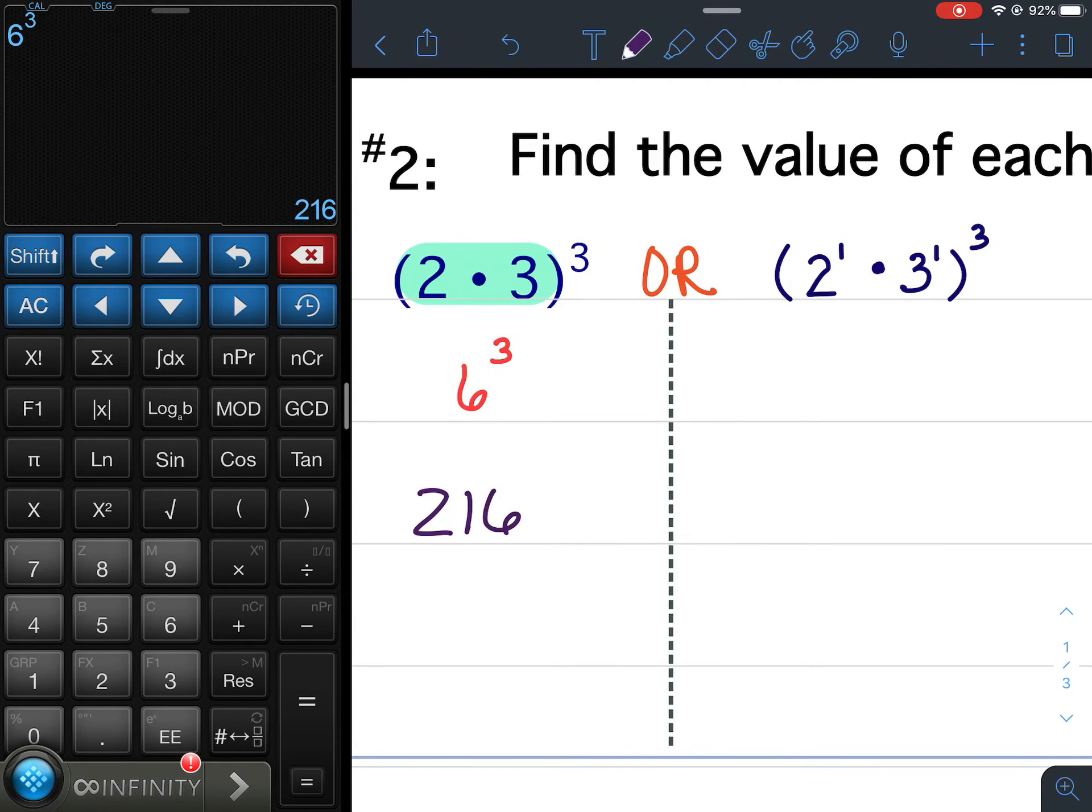Now we're going to do this using the power of products property, meaning I'm going to distribute this outside exponent. So 3 times 2 to the first. I have the 1 there, so 2 to the first. So I would take the 3 times 1 to get 2 cubed. And then I would take 3 times 1 to get the 3 cubed.